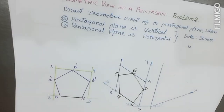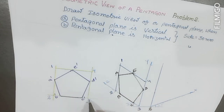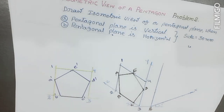Next, when the vertical face is tilted towards the right, it becomes the second configuration. In this case, side 2-3 is parallel to the horizontal plane, so the 2-3 line must be tilted with an inclination of 30 degrees to the reference line.